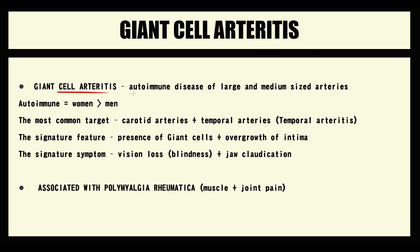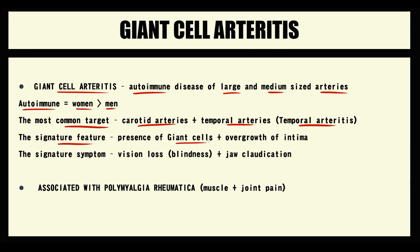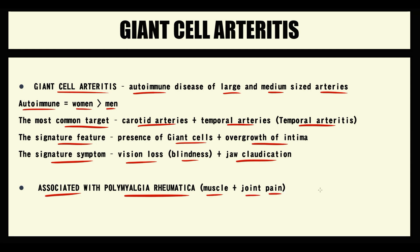Giant cell arteritis is an autoimmune disease of the large and medium-sized arteries. As with most autoimmune disorders, it affects mostly women. The most common targets are carotid arteries and especially temporal arteries, which is why the second name of this disorder is temporal arteritis. The signature feature is the presence of giant cells and overgrowth of the intima, and the signature symptoms are vision loss that can cause even blindness and jaw claudication. Giant cell arteritis is often associated with polymyalgia rheumatica, which manifests with muscle pain and joint pain.